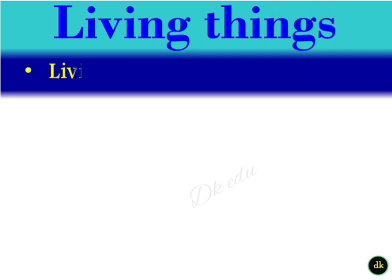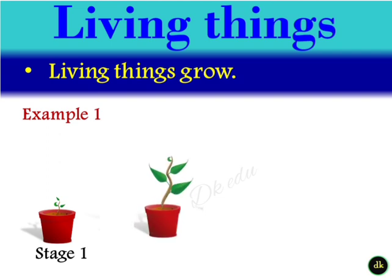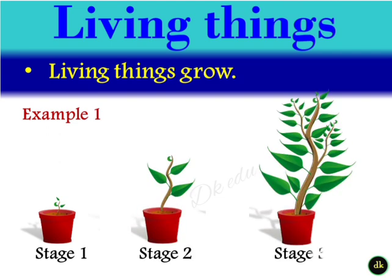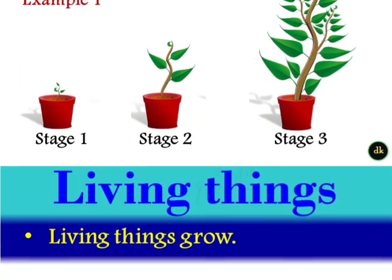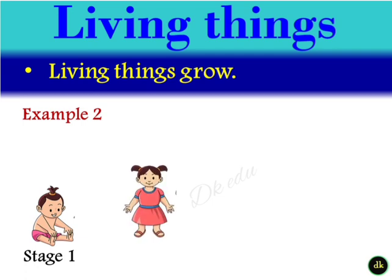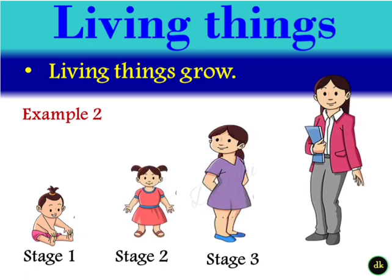Living things grow. Example 1: Stage 1, Stage 2, and Stage 3. Example 2: Stage 1, Stage 2, Stage 3, and Stage 4.